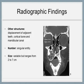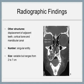Other Structures: adjacent teeth are frequently displaced in a mesial or distal direction away from the tumor. Cortical bone is often displaced buccally or lingually and is usually thinned in the same manner. A tumor originating in the mandible will often displace the mandibular canal in a lingual direction. Number: most always as a single entity. Size: variable, but ranges from 2 to 7 cm.